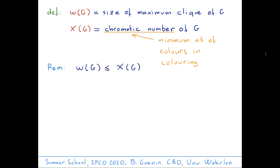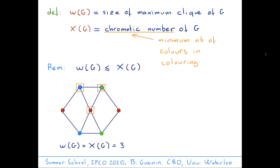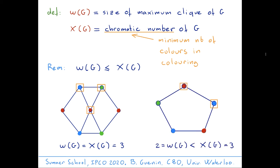There's an easy relationship between those two parameters: omega(G) ≤ chi(G). In the first example, omega(G) = 3 — three vertices form a clique — and chi(G) = 3, with a red, blue, and green coloring. In the second example, omega(G) = 2, since two adjacent vertices form the largest clique, but you actually need three colors to color that graph. This graph is called a 5-hole.